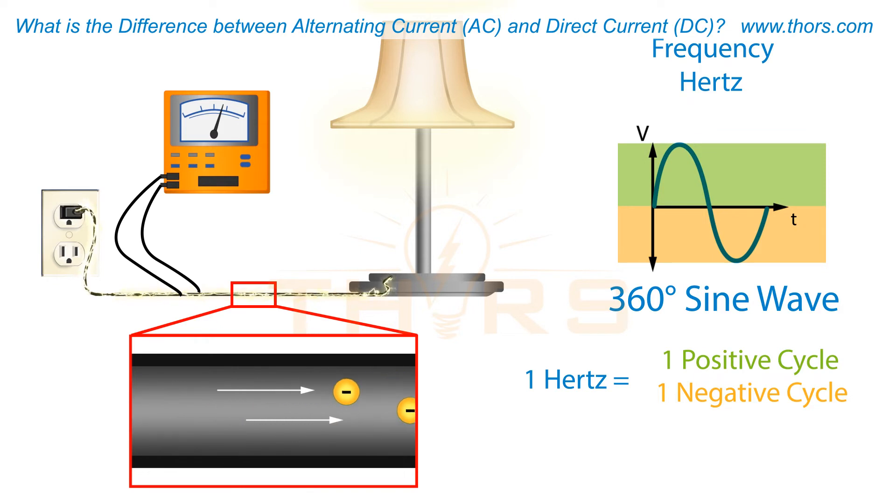If a wall outlet is said to possess 60 Hertz, then the sine wave would complete 60 cycles per second.